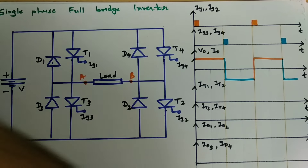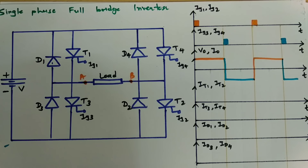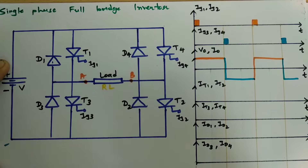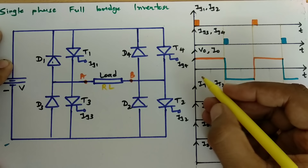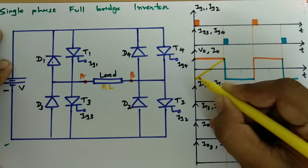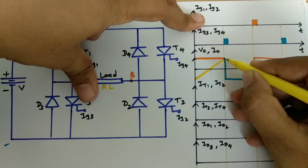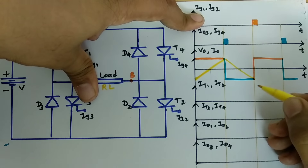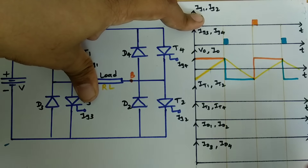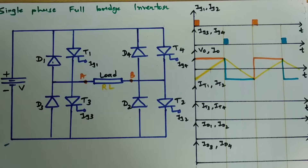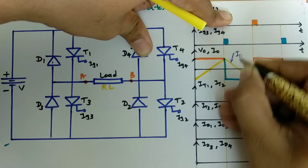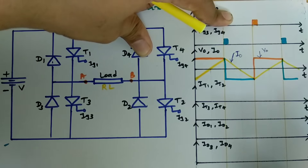If our load is an RL load, the current will increase during the positive cycle and decrease as the negative cycle comes. During the positive cycle current increases, and during the negative cycle current decreases. In case of RL load, this is the output current I0 and this is the output voltage V0.